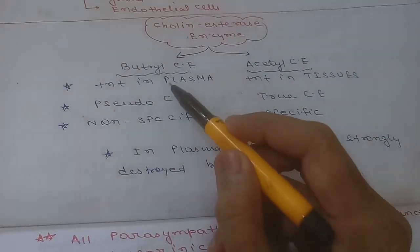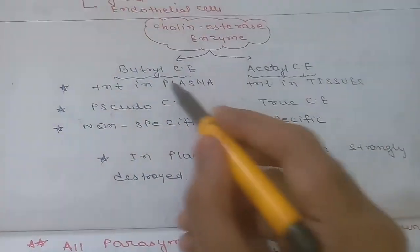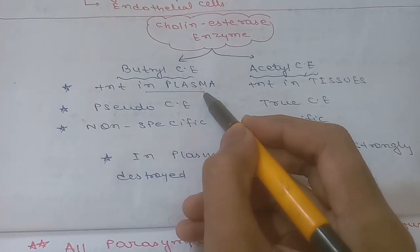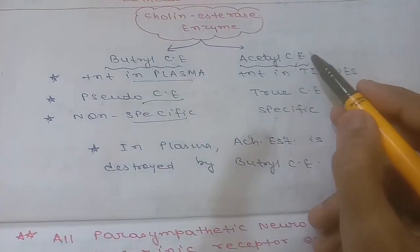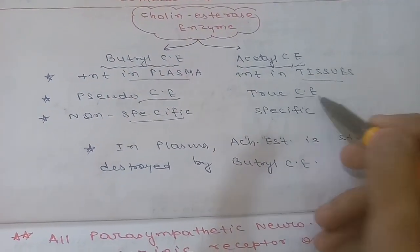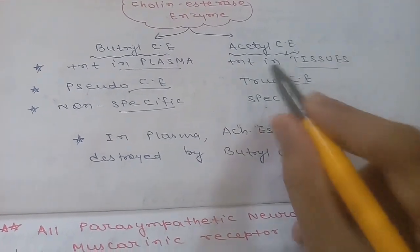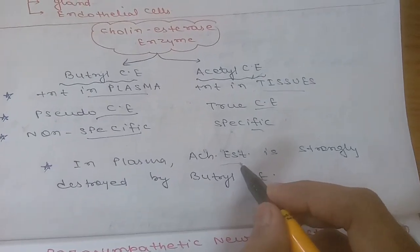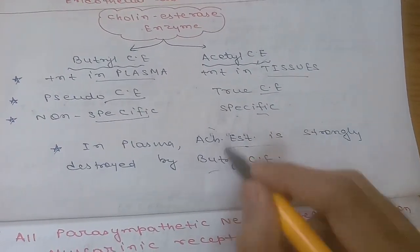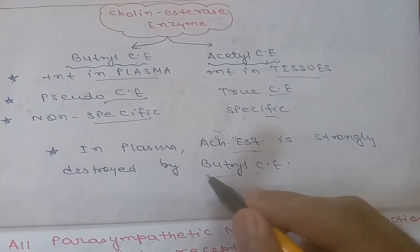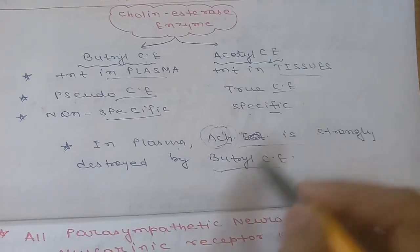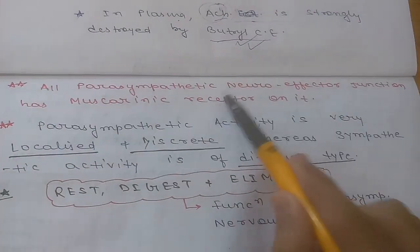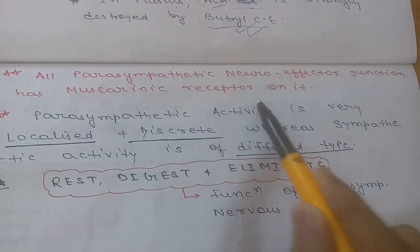There are two types of cholinesterase: butyrylcholinesterase (pseudo-cholinesterase), present in plasma, which is non-specific; and acetylcholinesterase (true cholinesterase), present in tissues, which is specific for acetylcholine. Acetylcholine in plasma is rapidly destroyed by butyrylcholinesterase.